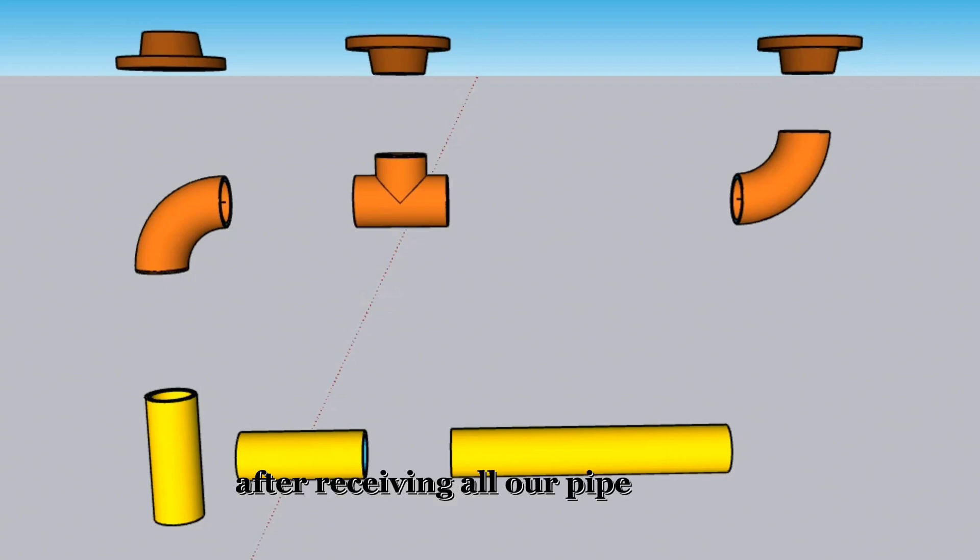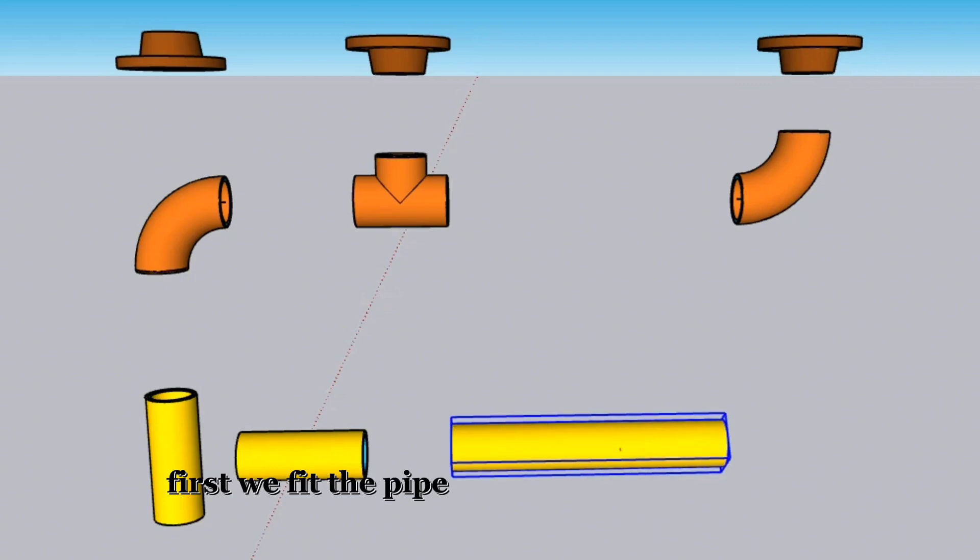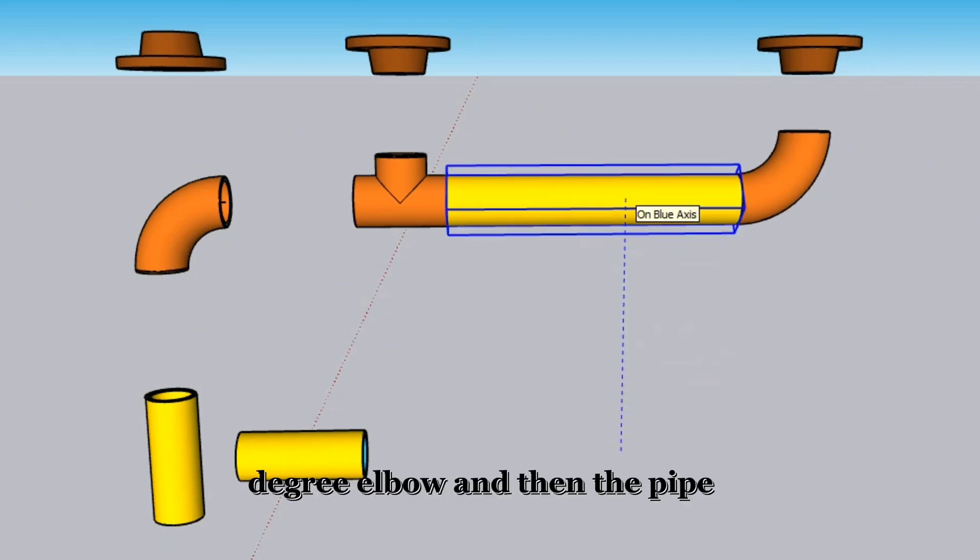After receiving all our pipe fittings, we can start the assembly phase. First, we fit the pipe piece together with a 90-degree elbow and then the pipe tee.